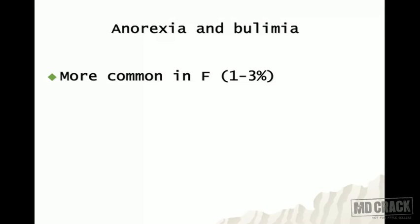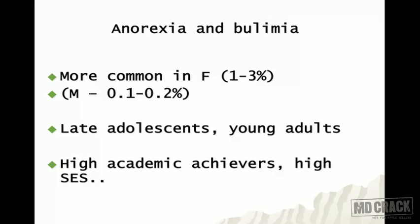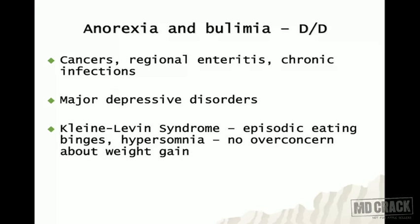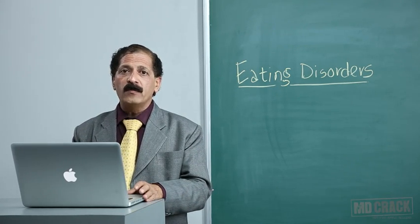Both bulimia and anorexia are more common in females — 1 to 3% prevalence — while in males it is very rare at 0.1 to 0.2%. Onset is typically in late adolescence and young adults, and these patients tend to be high academic achievers from high socioeconomic status. Differential diagnosis includes cancers, regional enteritis, chronic infections, major depressive disorder, Kleine-Levin syndrome (episodic eating binges with hypersomnia and no concern about weight), and borderline personality disorder with impulsive eating.